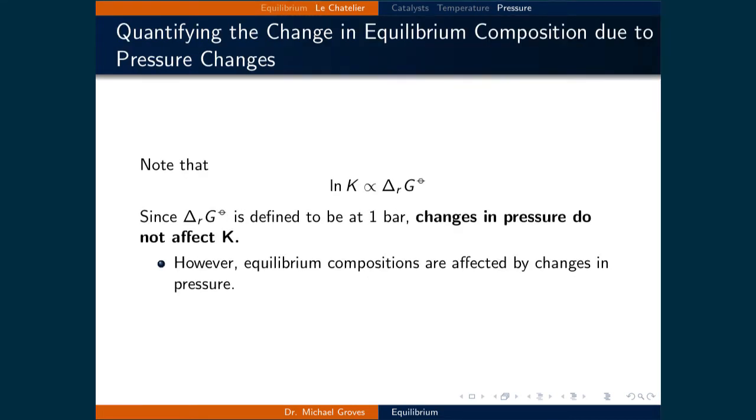How do we quantify changes due to varying pressures? We will note that the natural logarithm of the equilibrium constant is proportional to the standard change in Gibbs free energy of the reaction. This is defined at one bar, so changes in pressure do not affect K.